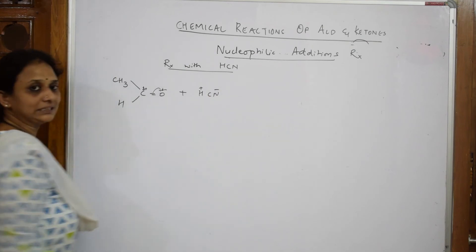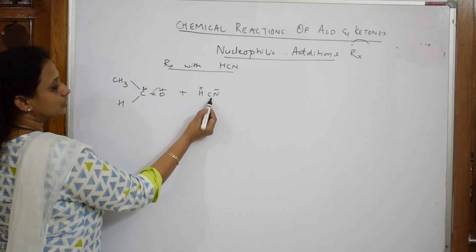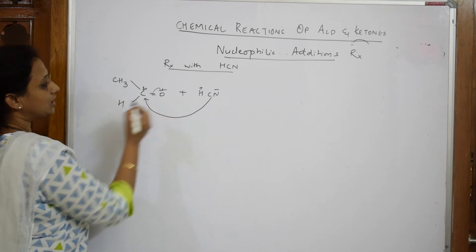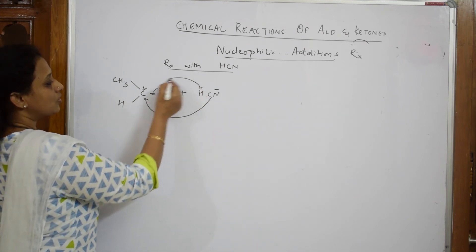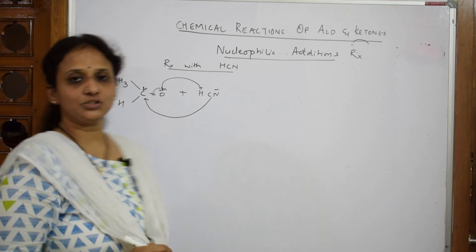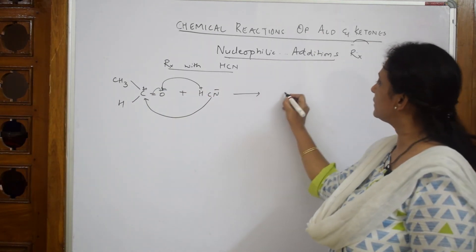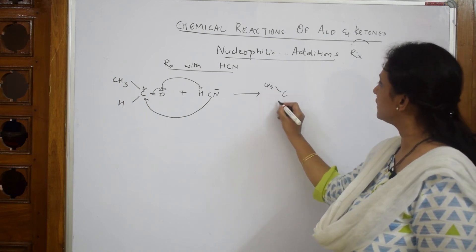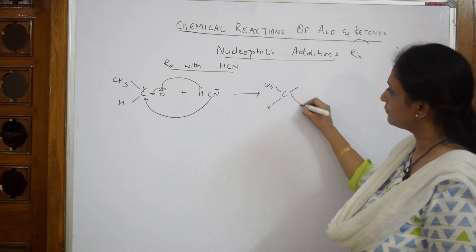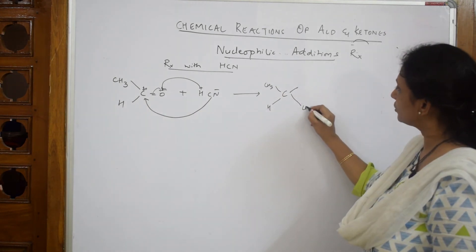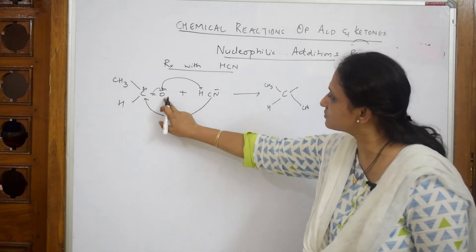This is plus, this is minus. The nucleophile CN- goes and attacks the carbon. You can write it step by step or in a single step. What do you get? Carbon with CH3, H, and four bonds - cyano (CN) to your carbon and oxygen minus.